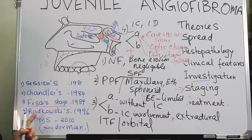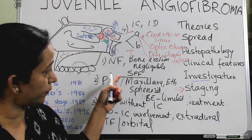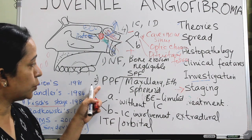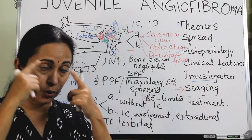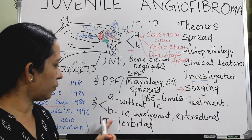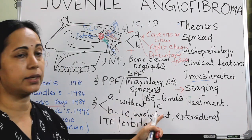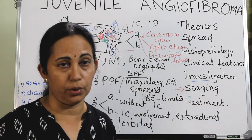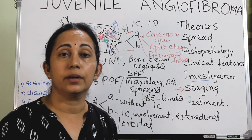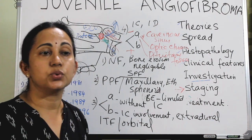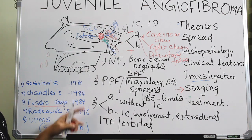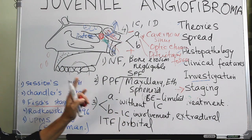To summarize Fisch staging: Stage 1 — tumor limited to nasopharynx with negligible bone erosion or erosion of the sphenopalatine foramen. Stage 2 — involvement of pterygopalatine fossa or maxillary, ethmoid, or sphenoid sinuses with limited bone erosion. Stage 3 — infratemporal fossa or orbital involvement; 3A without intracranial, 3B intracranial extradural. Stage 4 — intracranial intradural; 4A without cavernous sinus, optic chiasm, or pituitary involvement; 4B with involvement. You should be thorough with Fisch staging.